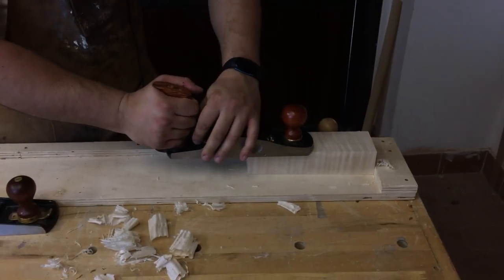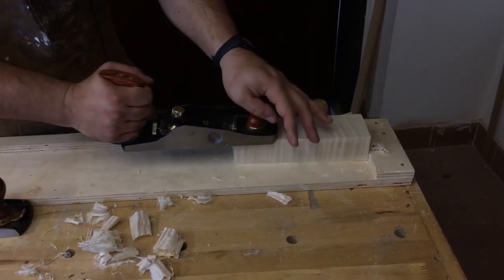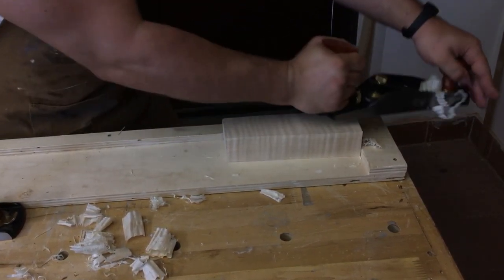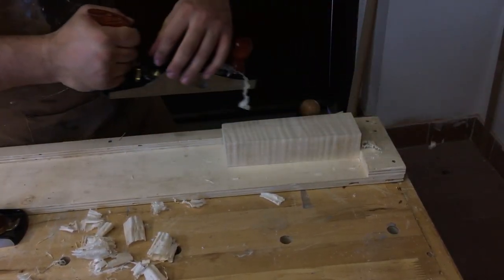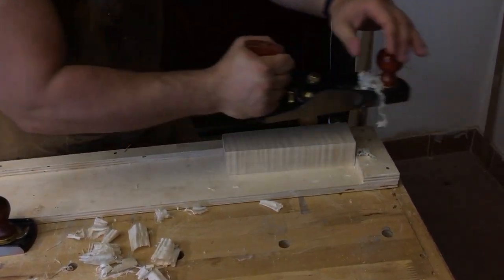Now let's try to take a figure maple which is very difficult to handle. As you can see with the Veritas plane we are able to obtain quite good shaving.